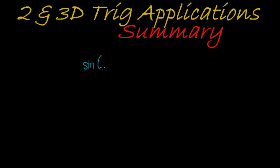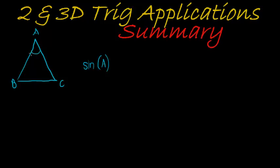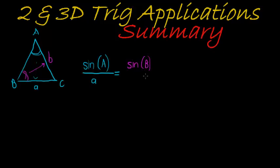The sine rule says that if I take the sine of an angle in any triangle — so there's a triangle A, B, and C — and it doesn't matter what that triangle looks like, if I take that angle and put it in a sine and divide it by the opposite side, then I'll get the same answer as when I take the sine of any other angle in that triangle, say angle B, and divide by its opposite side. That relationship is called the sine rule.